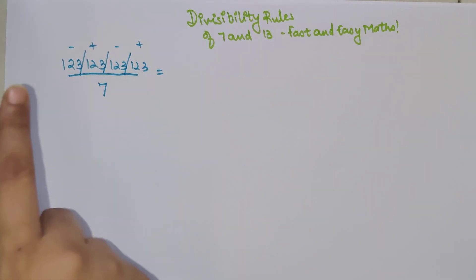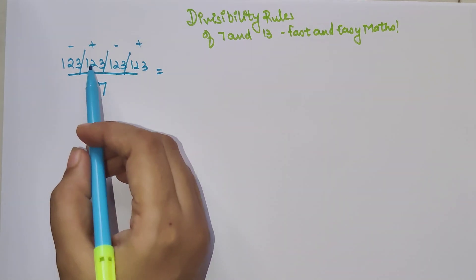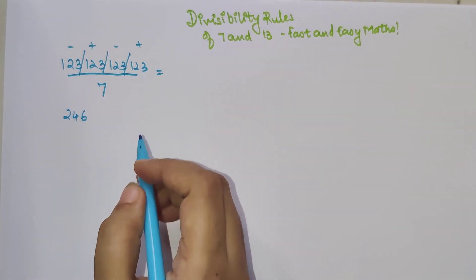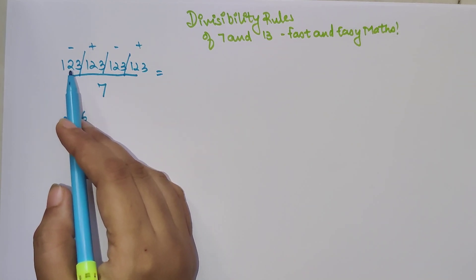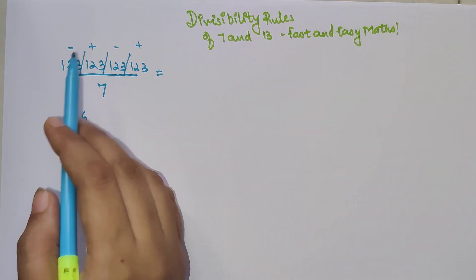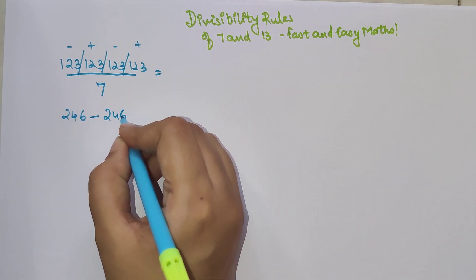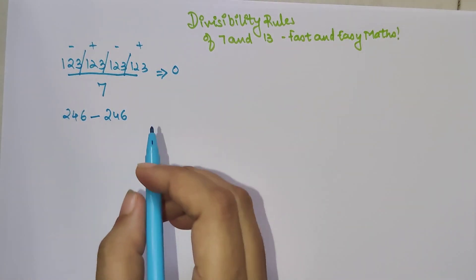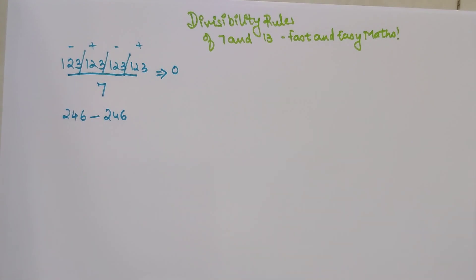So what did we do? Two steps: club the number from the right in groups of three, and put alternating plus and minus signs from the right. Now for this example, you add 123 and 123 to get 246 — both are positive so the sign is positive. The negative groups are also 123 and 123; since both are negative, we add them and get 246 with a negative sign. So the answer is 246 minus 246 = 0, meaning the remainder is zero.